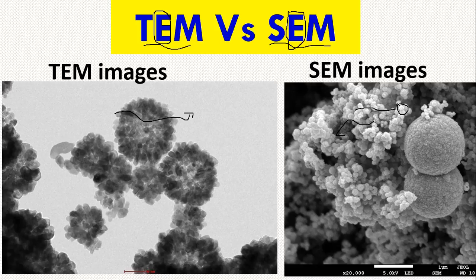In transmission electron microscopy, because we are interested in the internal structure, we make the sample very, very thin. We pass electrons through it, and the information we get is displayed in black and white.